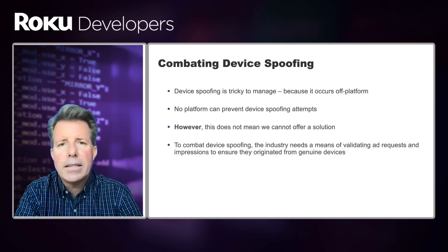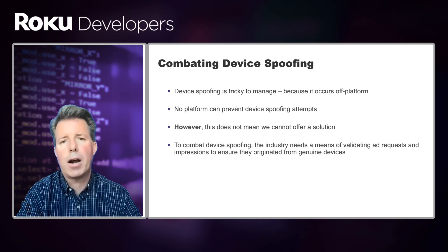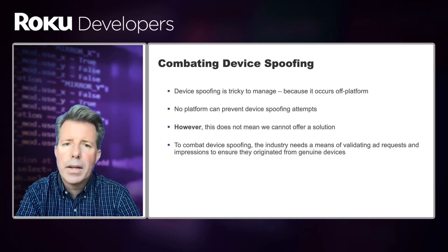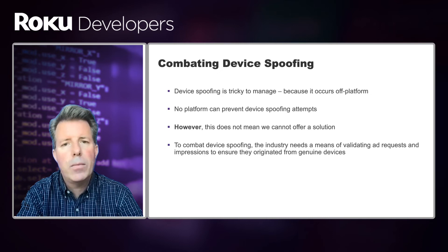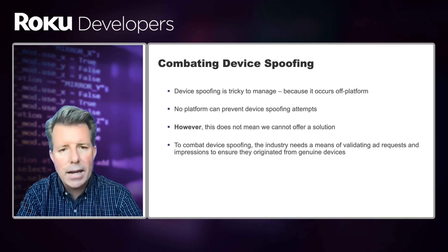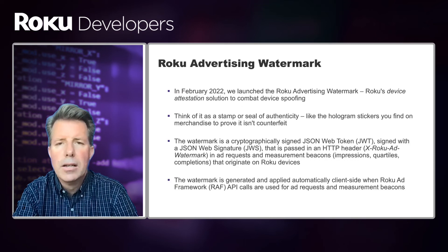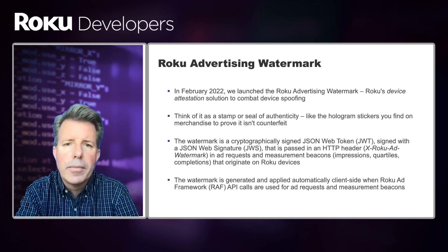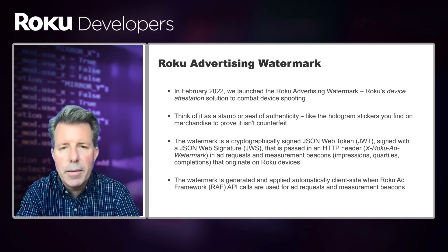How do we combat device spoofing? Device spoofing is tricky to manage because it occurs off of our platform — no platform can totally prevent it. However, the industry needs a means of validating ad requests and impressions to ensure they originated from genuine devices. That leads us to the Roku Advertising Watermark. In February of this year, we launched the Roku Advertising Watermark, our device attestation solution to combat device spoofing.